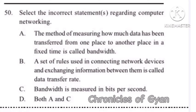Question 50: Select the incorrect statements regarding Computer Networking. The incorrect statement is Option B: 'A set of rules used in connecting network devices and exchanging information between them is called data transfer rate.' This definition is actually that of a protocol. Data transfer rate refers to the amount of digital data that is moved from one place to another in a given time.